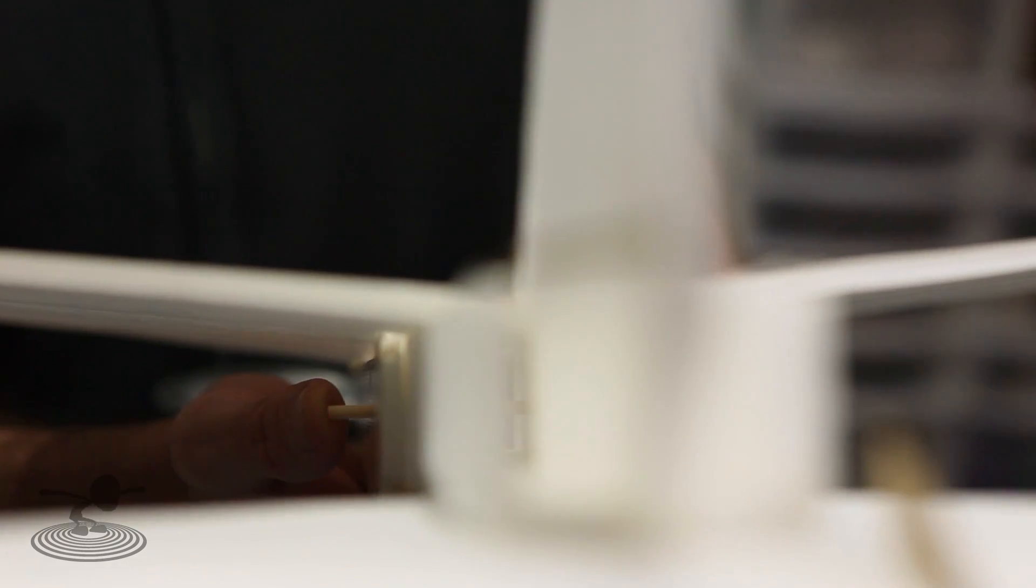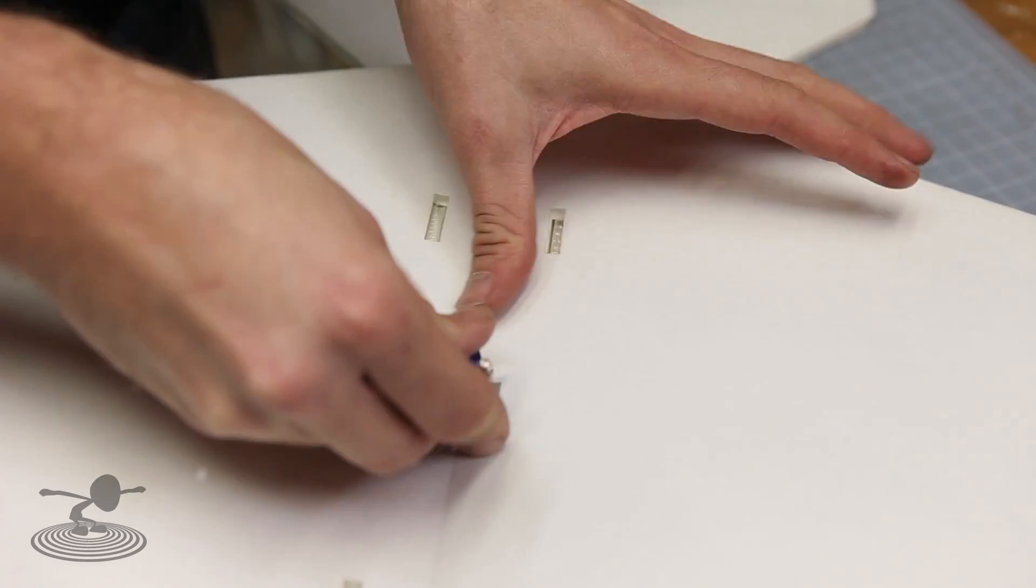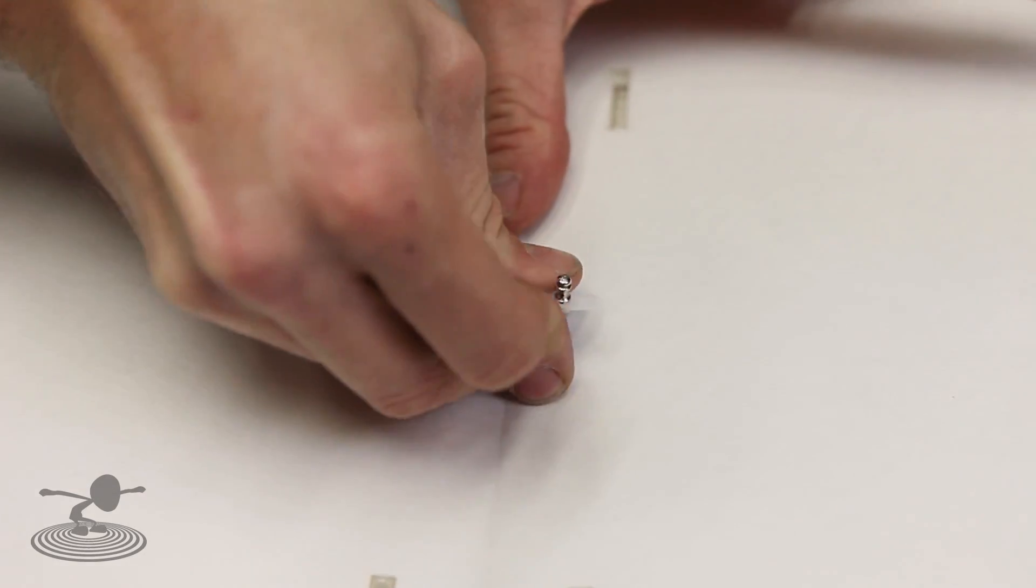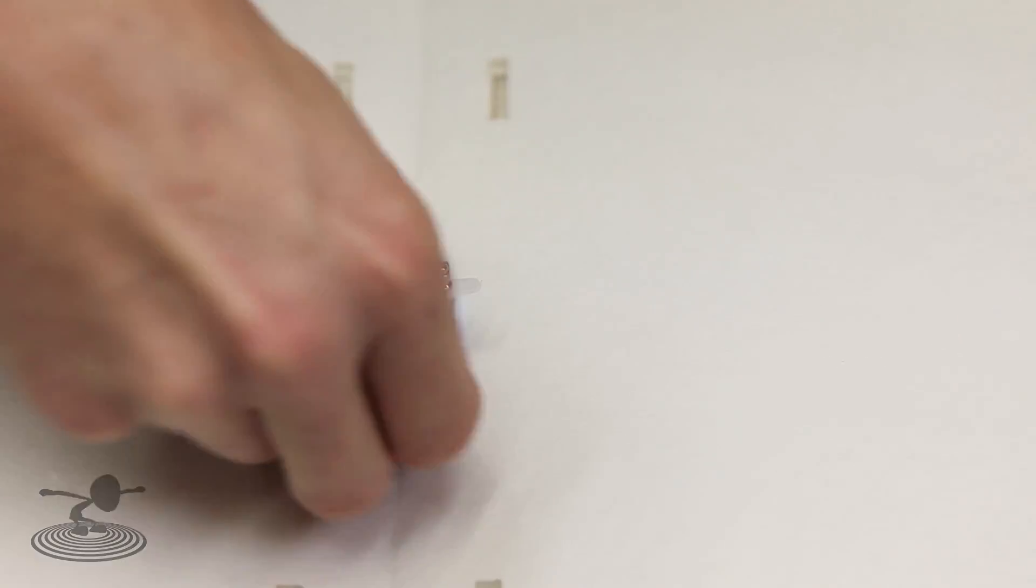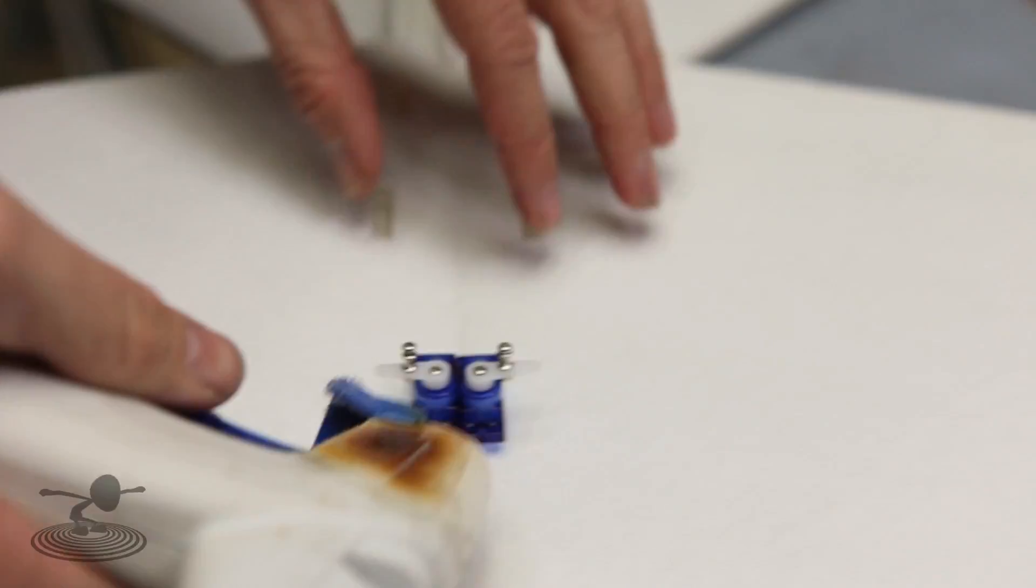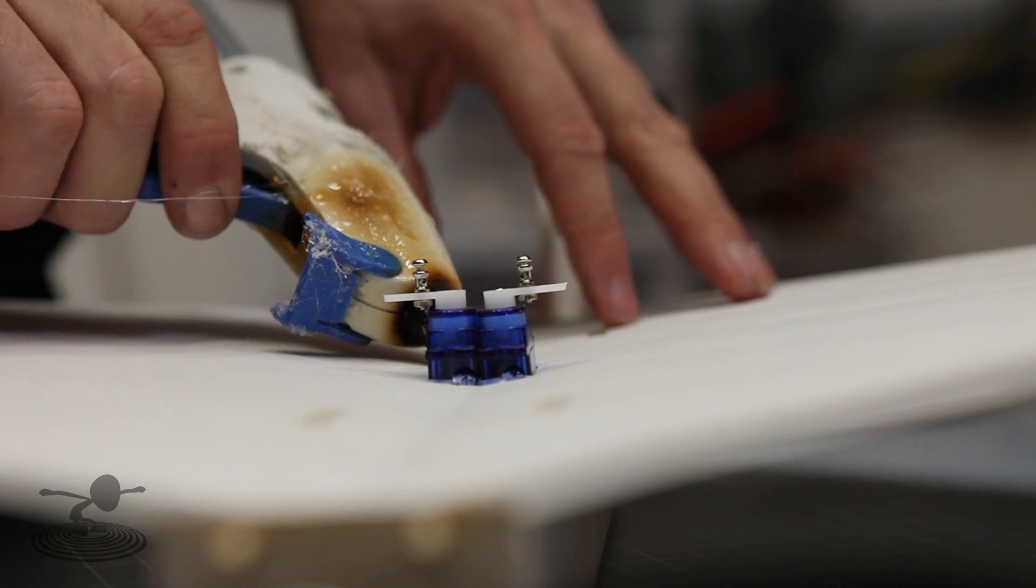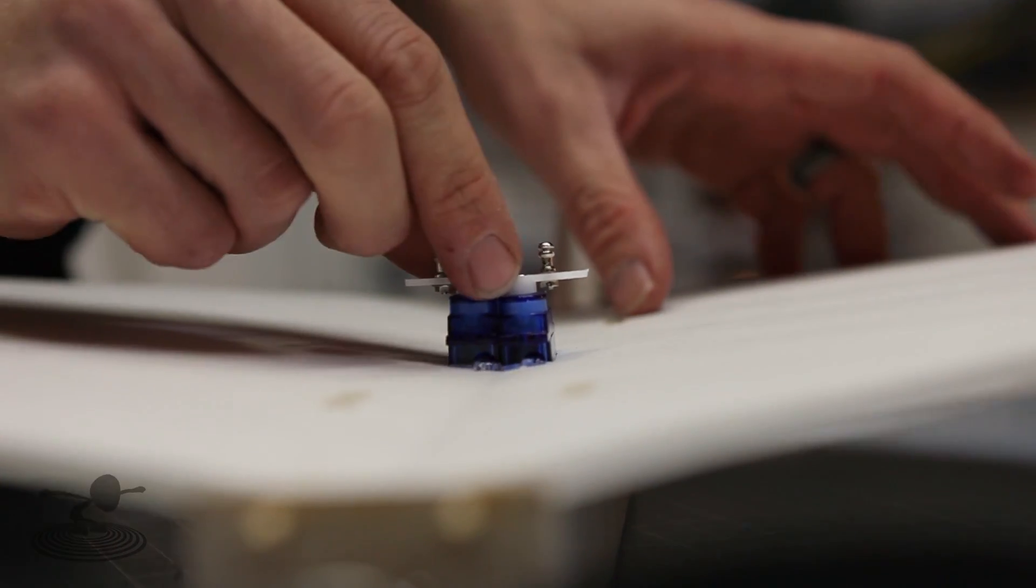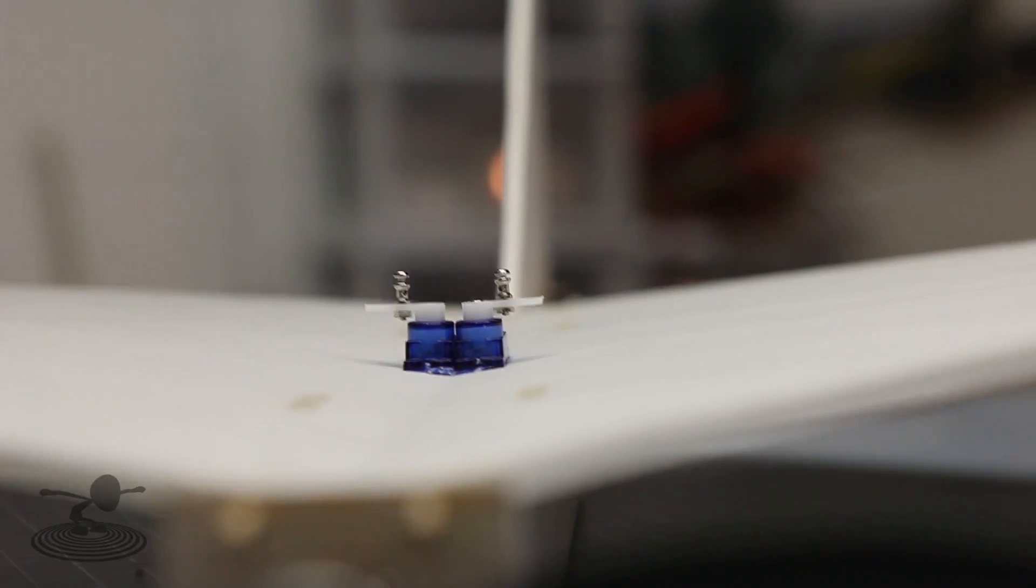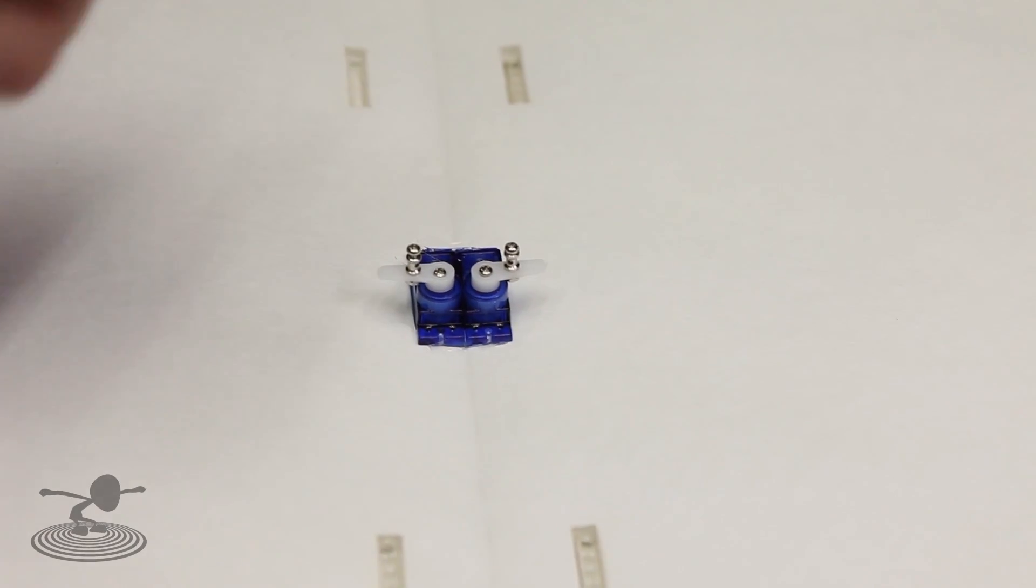Now if the power pod is on, our next step is to install the servos and the linkages. We're going to take our two servos that have already been centered and have the linkage stoppers installed, and we're going to push them down. It's a little bit of a snug fit, and we want it that way. Once you've got them both down, lift them both up. Put a small drop of hot glue underneath each flange and then seat them down in. You can always come back later with an excess piece of foam to squeegee off any extra that you don't want.